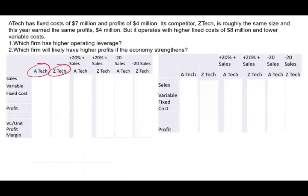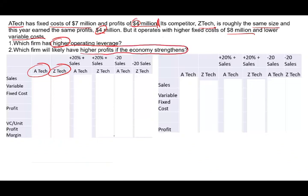Let's take a look at this exercise and see how we compute the degree of operating leverage. We have two companies. A-TAC has a fixed cost of $7 million and a profit of $4 million. Its competitor, Z-TAC, is roughly the same size and also earned a profit of $4 million, but operates with a higher fixed cost of $8 million and a lower variable cost. We'll compute each firm's operating leverage, see which has the higher value, and determine which firm will likely have a higher profit if the economy strengthens or weakens.